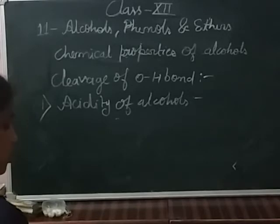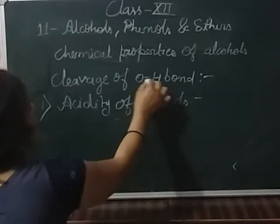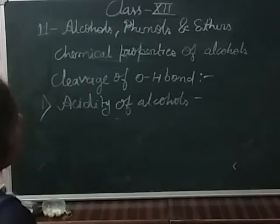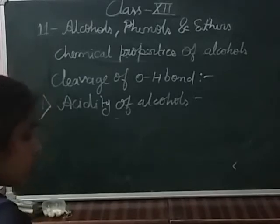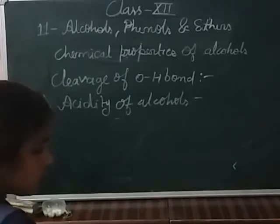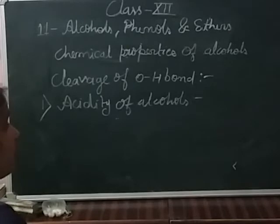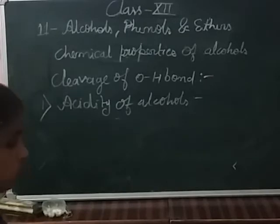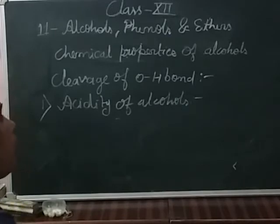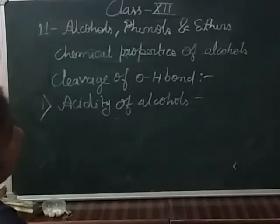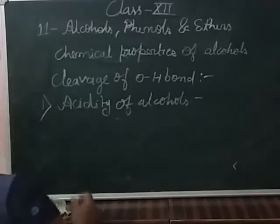The acidity character of alcohols is due to the polar nature of the O-H bond — it means the polarity present between the O-H bond. The acidity character depends on this polarity. If an electron-releasing group like an alkyl group increases, then the electron density on oxygen increases, causing the polarity of the O-H bond to decrease. If the polarity of O-H decreases, the acidic strength of the alcohol also decreases.